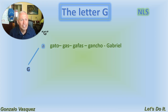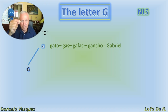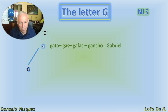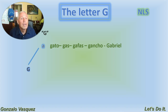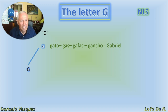Gancho — that can be a cloth hanger or just a hook. Gabriel — it's a man's proper name, like Gabriel García Márquez. Everybody knows who he was. Once again, la letra G con la vocal A sounds GA: gato, gas, gafas, gancho, Gabriel.